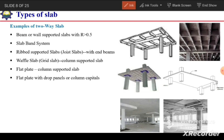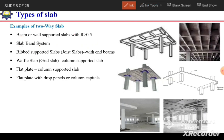Examples of two-way slabs include beam- or wall-supported slabs where R is greater than 0.5. In a slab band system, if bands run in both perpendicular directions and the panel inside has an aspect ratio more than 0.5, that panel is considered a two-way slab. Both conditions — bands in two directions and R greater than 0.5 — must be satisfied.